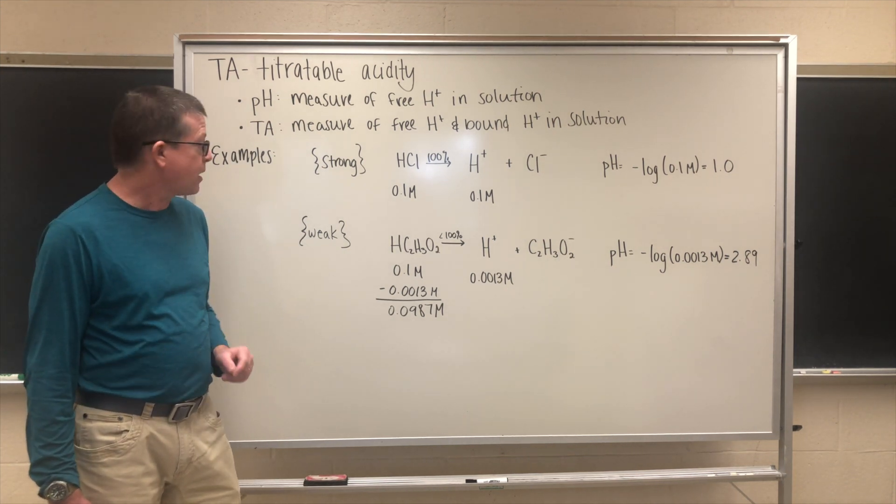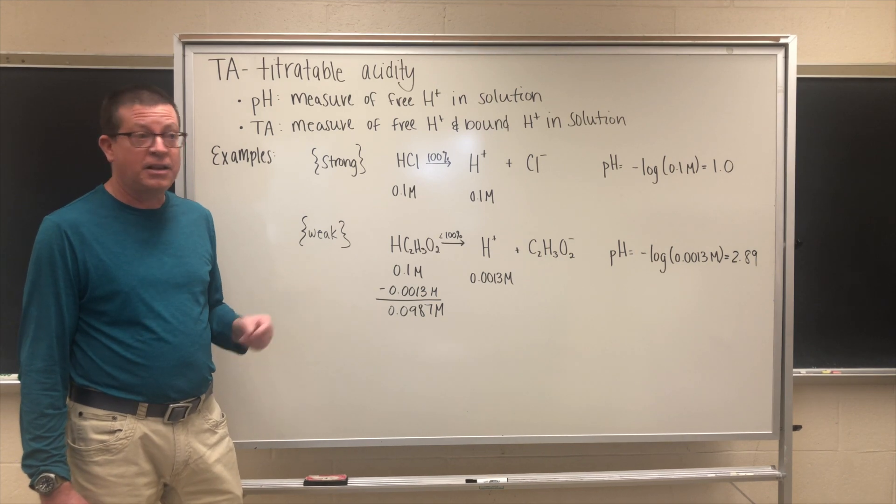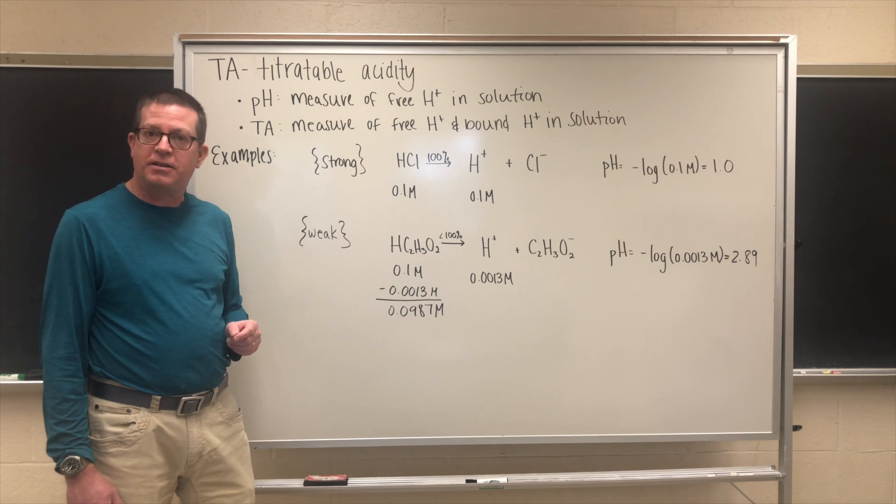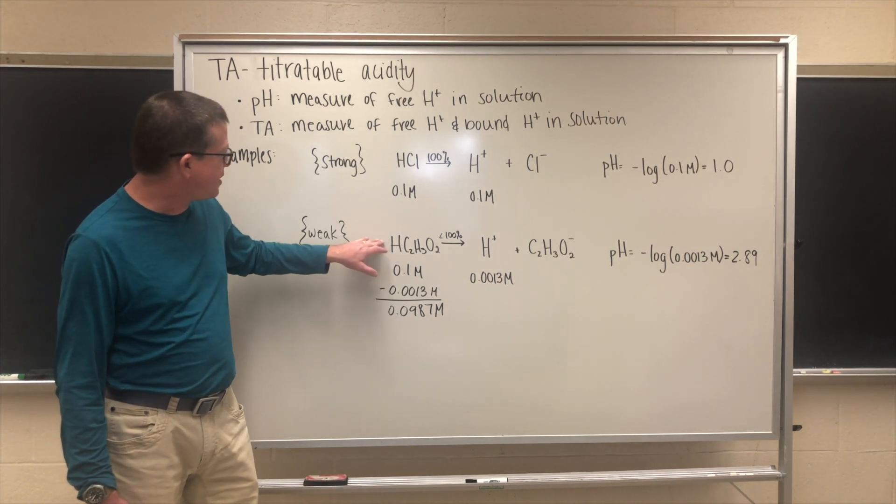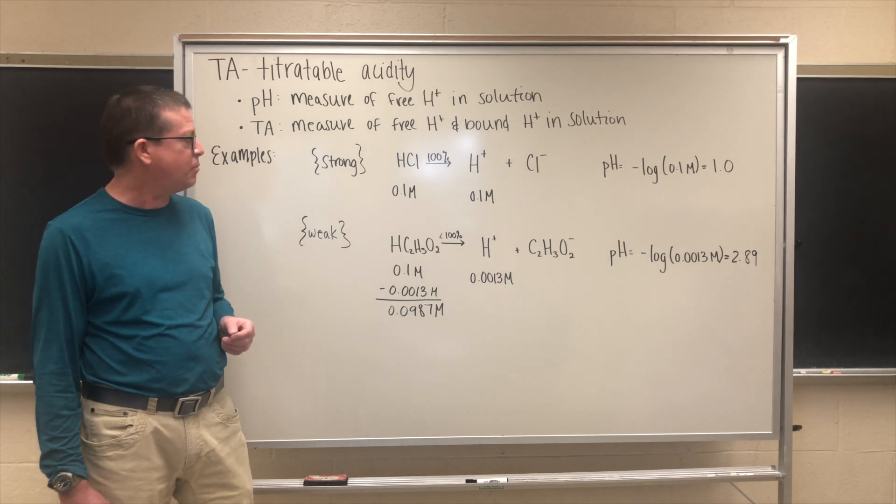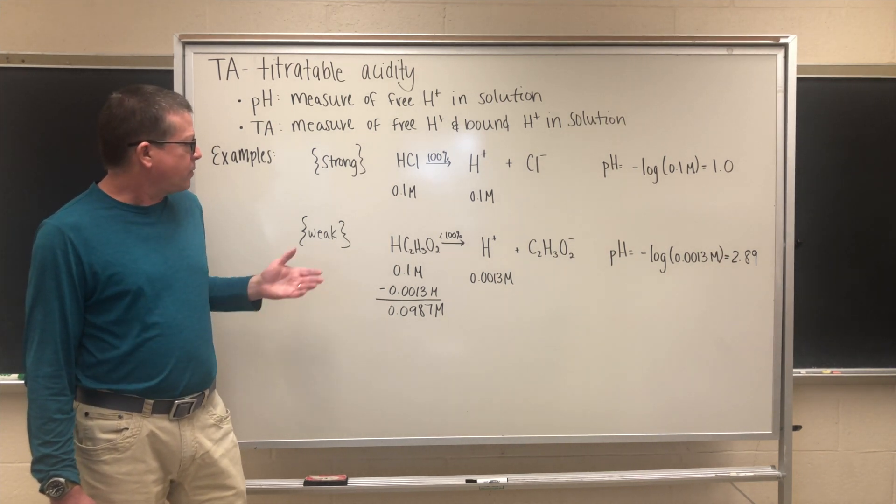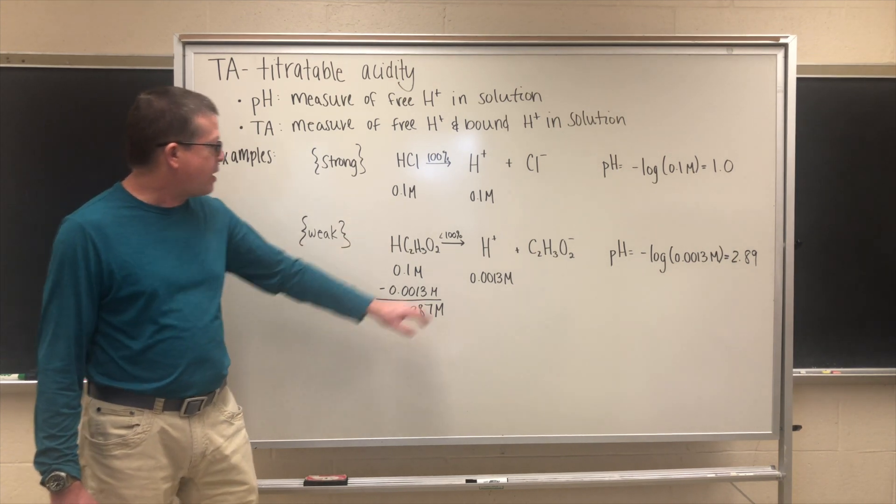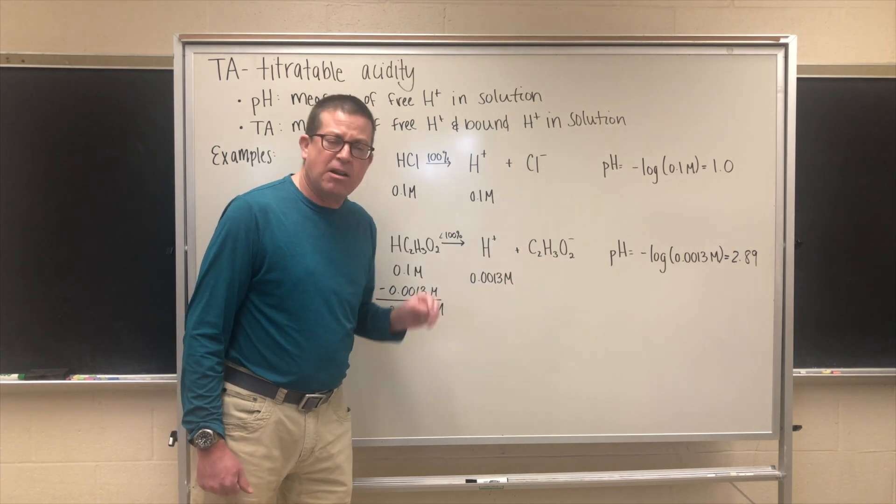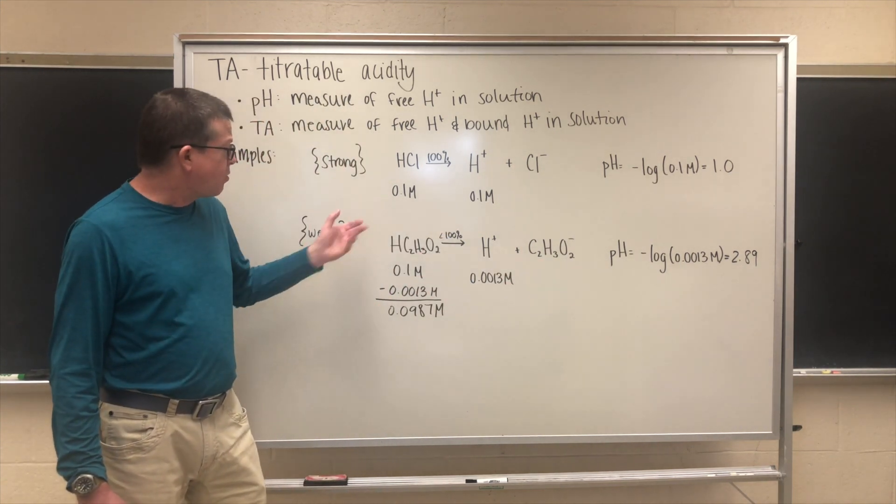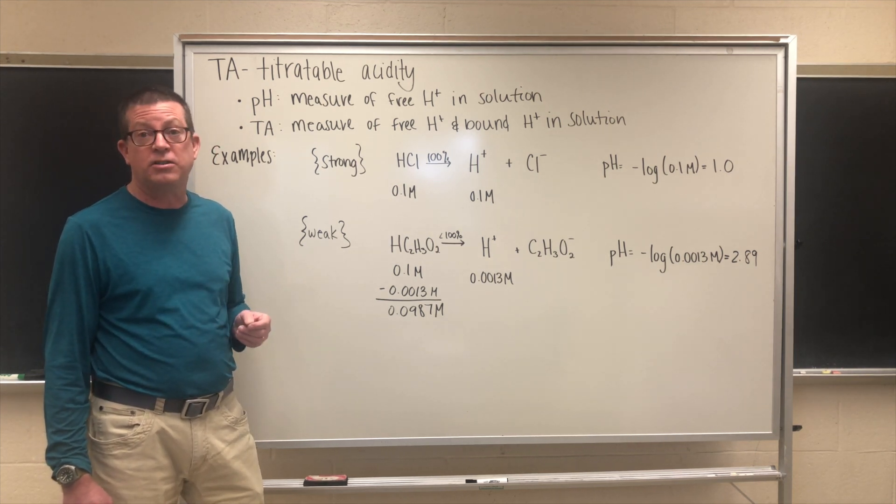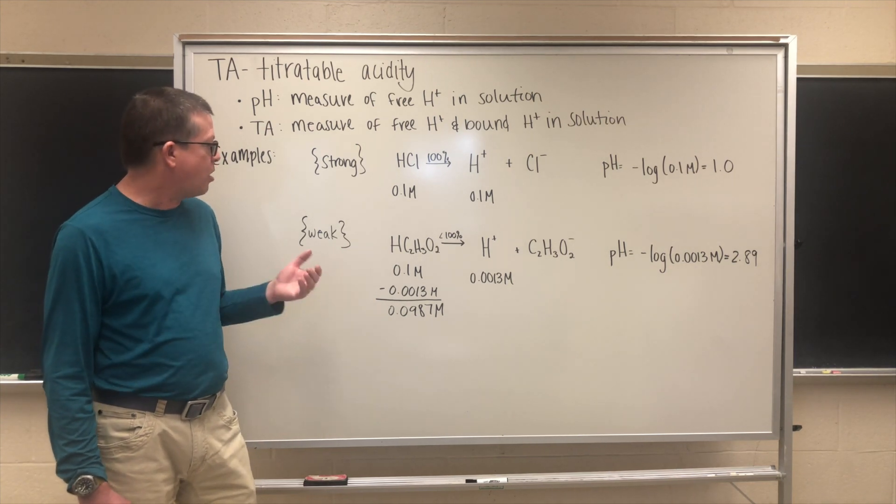Many of the organic acids we would expect to find in kombucha are going to be weak acids. A weak acid by definition is one that dissociates less than 100% in solution. A good example is acetic acid, which is one of the primary acid components found in pretty much any kombucha. When acetic acid dissociates, we make hydrogen ion and the acetate ion.